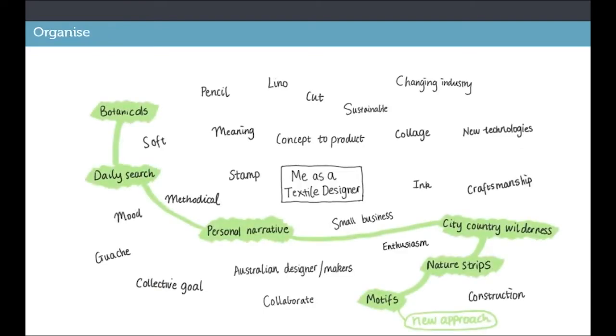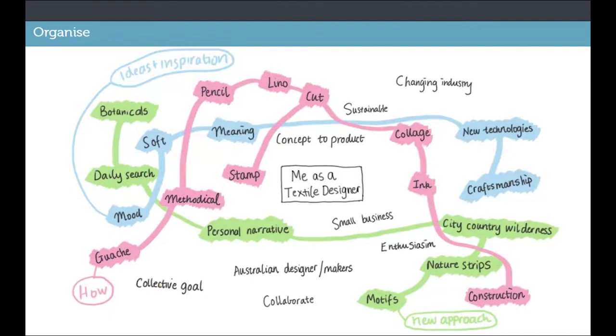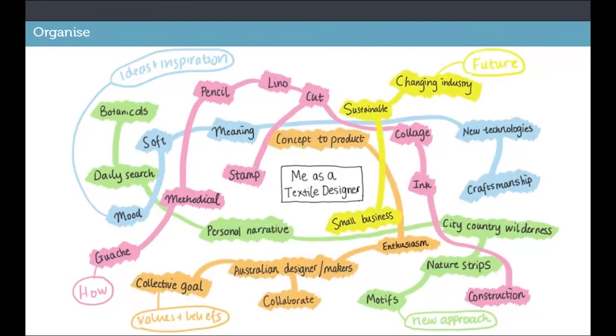Step 2 involves finding connections between the ideas in relation to the five reflective questions. Color is a useful way to distinguish connections around the different questions.